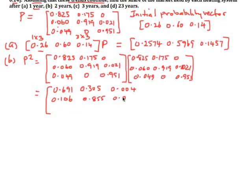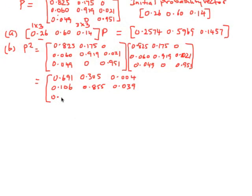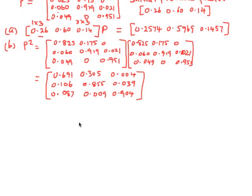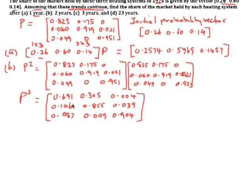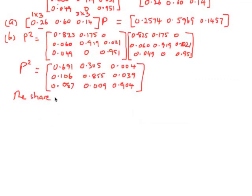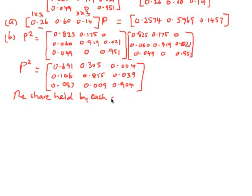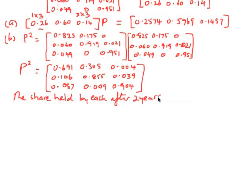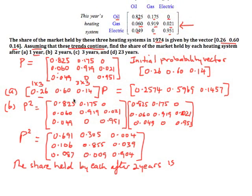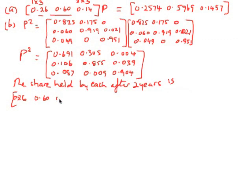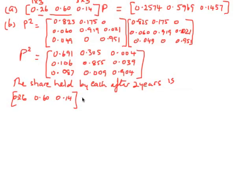You can check the arithmetic to make sure I'm getting the right calculation. Finally, we get 0.904 completing P squared. Now, the share held by each heating system after two years—we have to start with where we were initially, which was 0.26, 0.60, and 0.14.